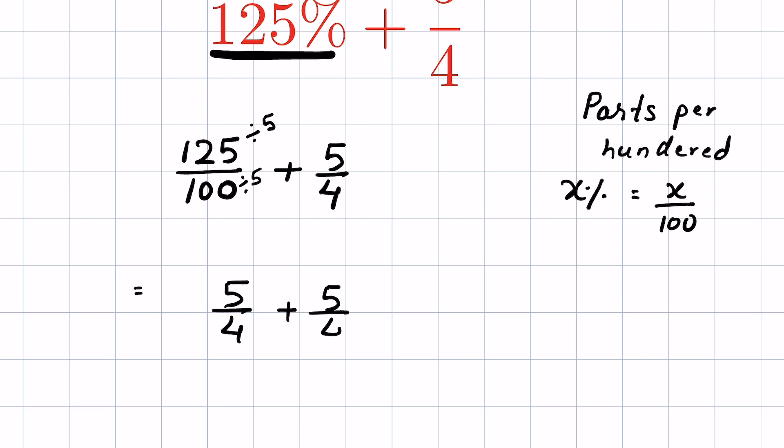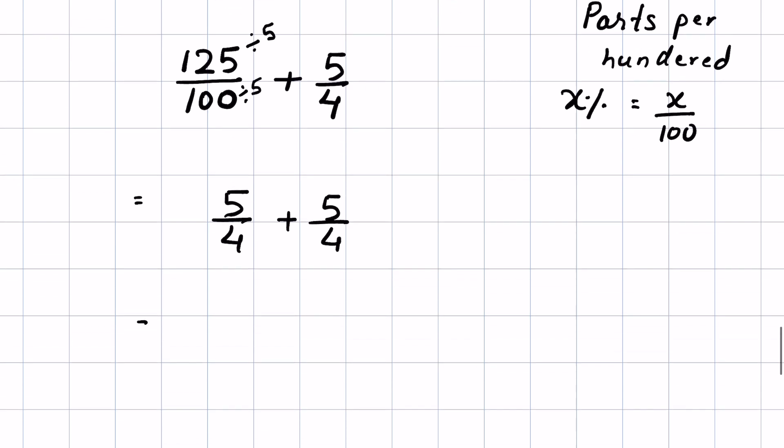Now we have two like fractions having the same denominator. So we can add them by writing the common denominator, 5 plus 5 upon 4.